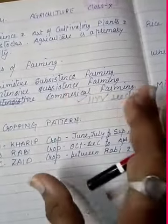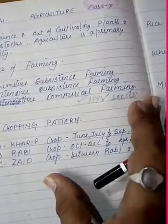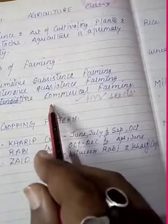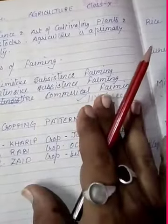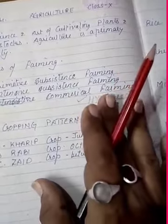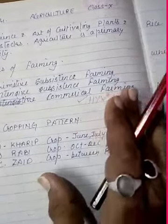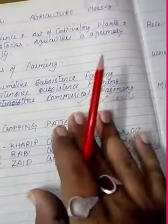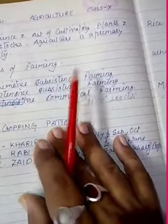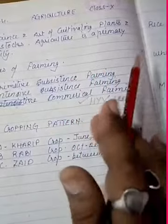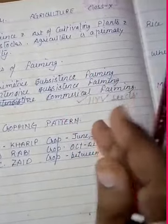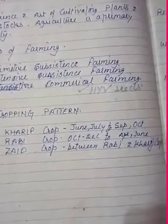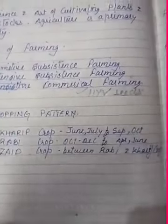Plantation is also a type of commercial farming. It is mostly practiced in Assam, Bengal, and Kerala. In India, tea, coffee, rubber, sugarcane, and banana are the important plantation crops.